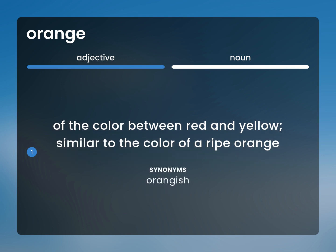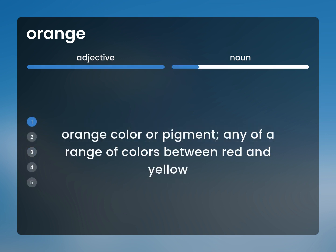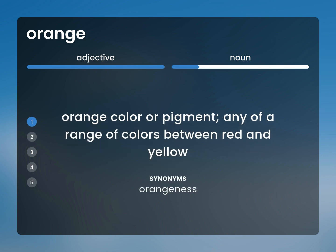Orangish. Orange color or pigment, any of a range of colors between red and yellow. Orangeness.